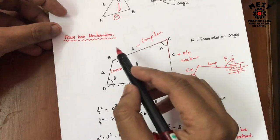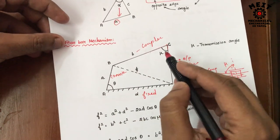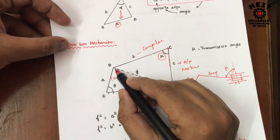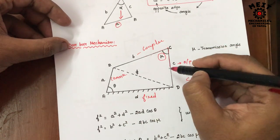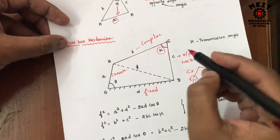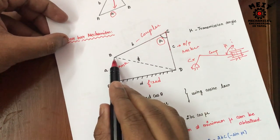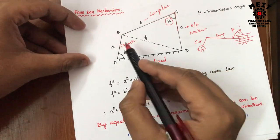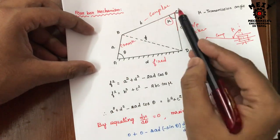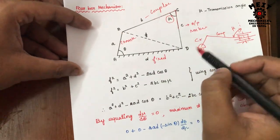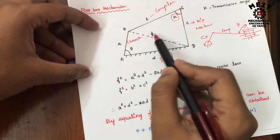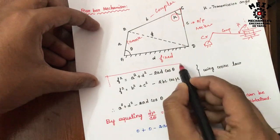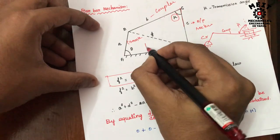In the 4-bar chain mechanism, mu is the transmission angle between the coupler and the rocker. To calculate it, we divide the mechanism into two triangles by drawing a line from B to D with length f. This gives triangle ABD and triangle BCD, with the common side being line BD.